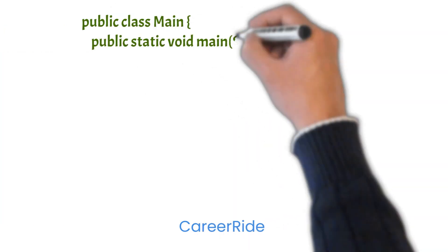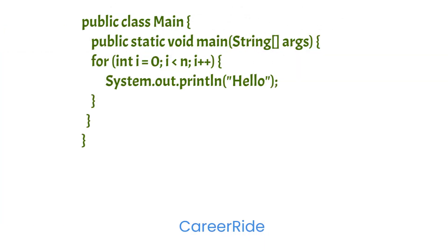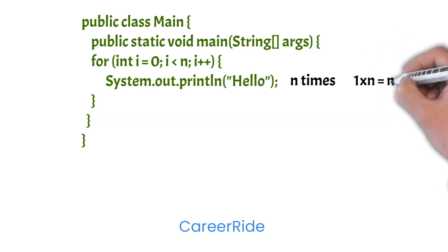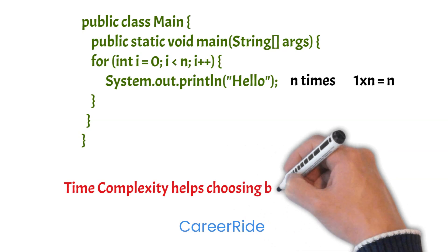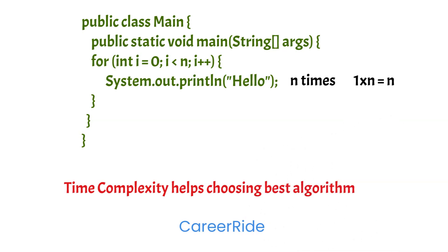Now take another example. Here, a print statement will take some constant time to run, and it will run for n times. So we can say the time complexity of the code is one multiplied by n, that is n. In this way we can calculate the time complexity of an algorithm, which helps us choose the best algorithm to solve our problem without considering the environment in which the program is running.